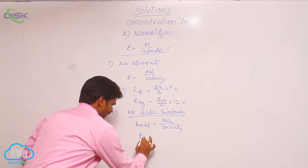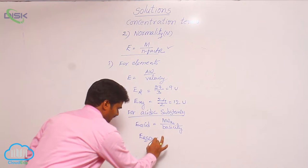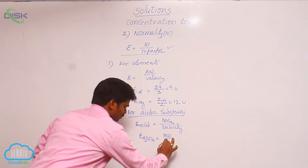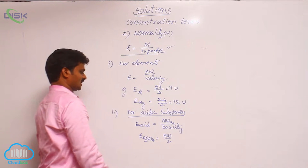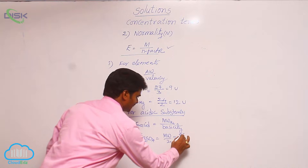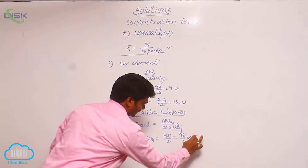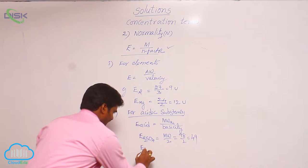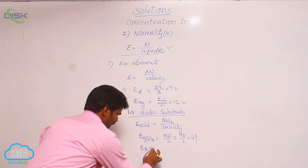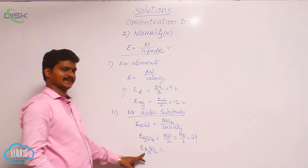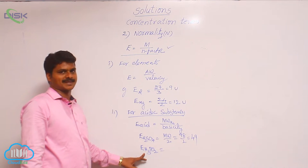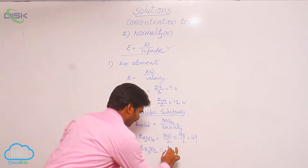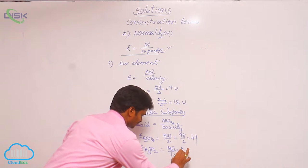The equivalent weight of H2SO4 is equal to its molecular weight divided by 2. H2SO4 molecular weight is 98, divided by 2 gives 49. Similarly, the equivalent weight of H3PO2 — hypophosphorous acid — has basicity 1, so it is molecular weight divided by 1, which means equivalent weight equals molecular weight.